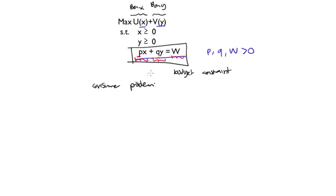So this is the problem of a consumer that has to maximize total benefits, given that it cannot spend more than W units of wealth. And in fact, as long as the marginal benefit of x and y are positive, the consumer is going to want to spend it all — hence the equality constraint.